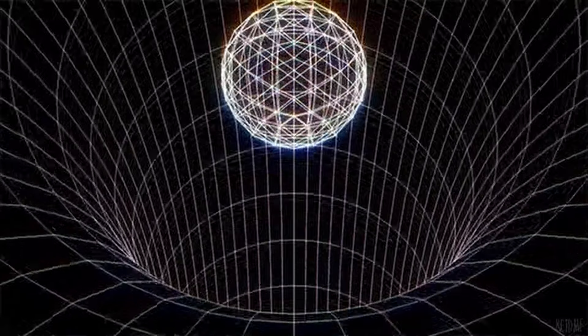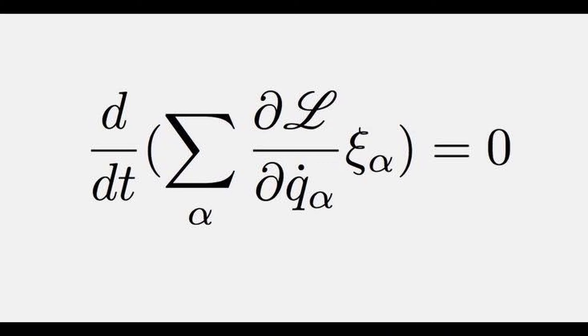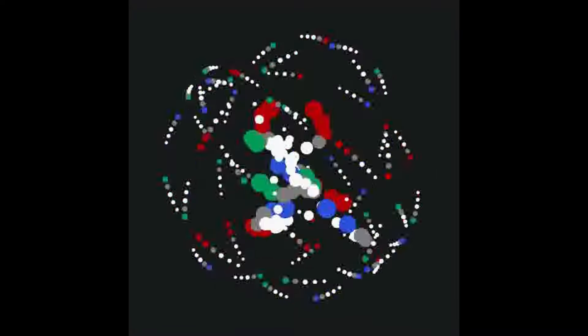Noether's Theorem, named after the German mathematician Emmy Noether, is a fundamental result in modern physics. Noether's Theorem states that for every continuous symmetry in a physical system, there exists a conservation law.